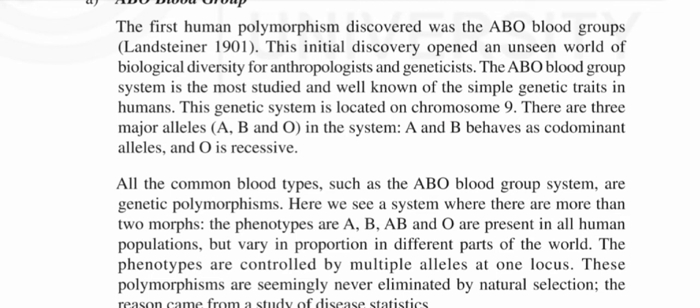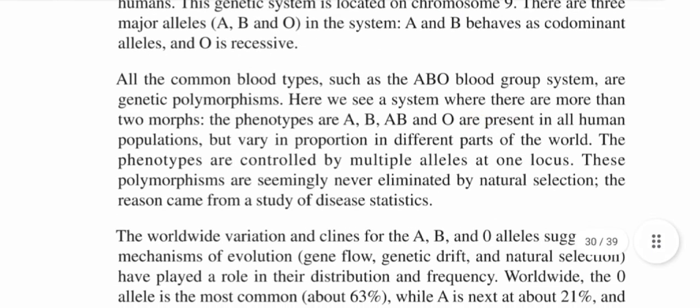The phenotypes A, B, AB, and O are present in all human populations but vary in proportion in different parts of the world. The phenotypes are controlled by multiple alleles at one locus. These polymorphisms are seemingly never eliminated by natural selection, and the reason came from a study of disease statistics.